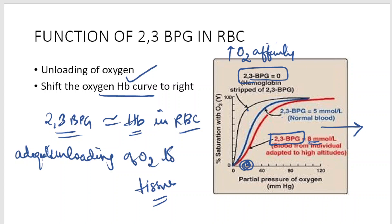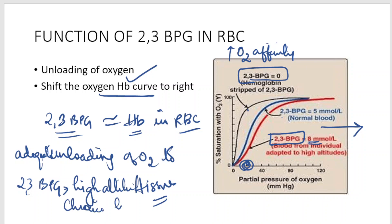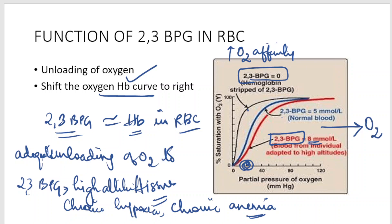Conditions in which 2,3-bisphosphoglycerate can be elevated include high altitude, chronic hypoxia, and chronic anemia — as a compensatory mechanism. In these conditions, the elevated 2,3-bisphosphoglycerate causes more unloading of oxygen to the tissues, which is necessary for survival.